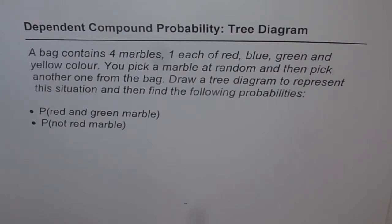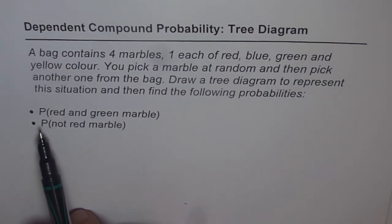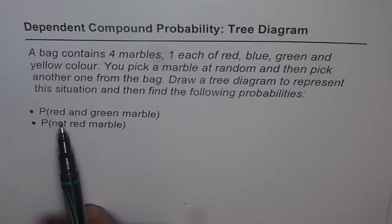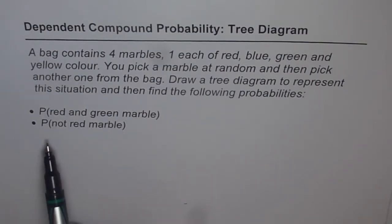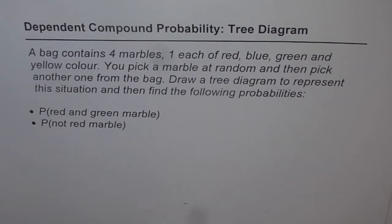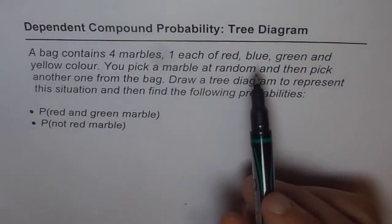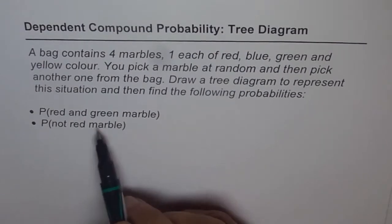A bag contains four marbles — one each of red, blue, green, and yellow color. You pick a marble at random and then pick another one from the bag. Draw a tree diagram to represent this situation and then find the following probabilities: first, the probability of getting a red and green marble; and second, the probability of not getting a red marble. We will draw the tree diagram first, understand the question, and then solve it.